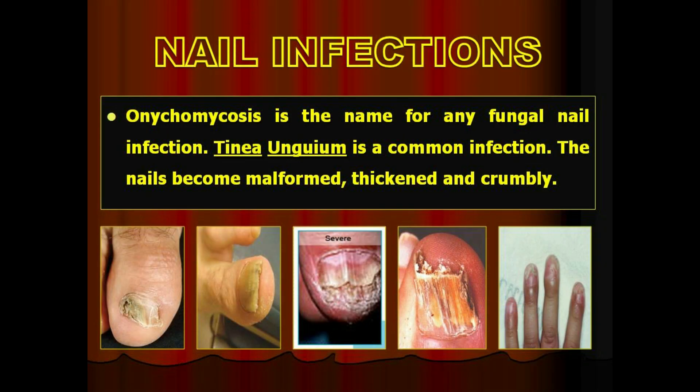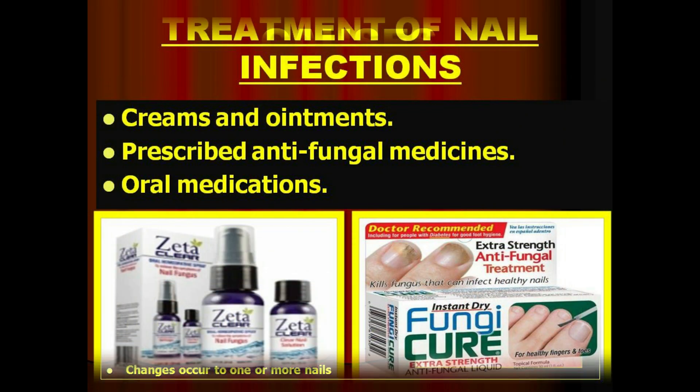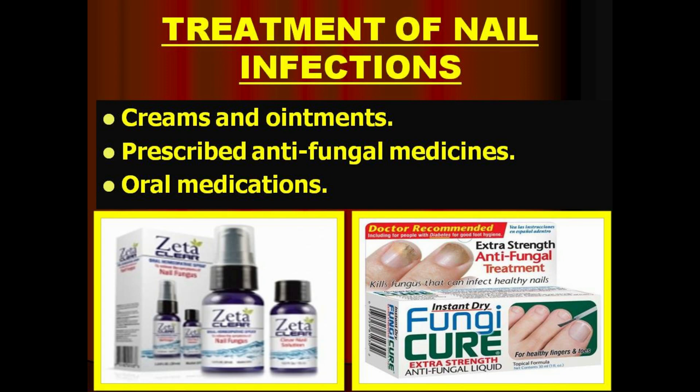Selenium sulfide shampoo may reduce the risk of spreading the infection. Onychomycosis is the name for any fungal nail infection; tinea unguium is a common infection where nails become malformed, thickened, and crumbly. People with lower immunity due to diabetes, HIV, and poor circulation are common victims. Symptoms include brittleness, thickening, ridges on the nail, loss of luster and shine, discoloration, distortion of nail shape, and crumbling of the nail. Infections are commonly treated with antifungal creams, ointments, and prescribed medicines; in some cases oral medication is also prescribed.